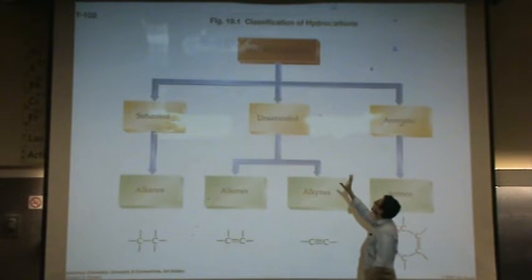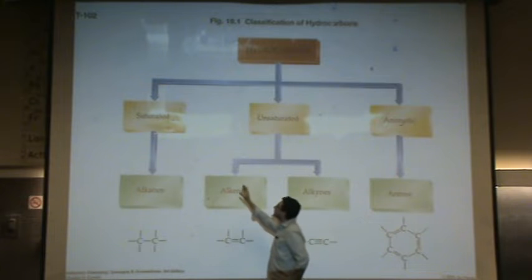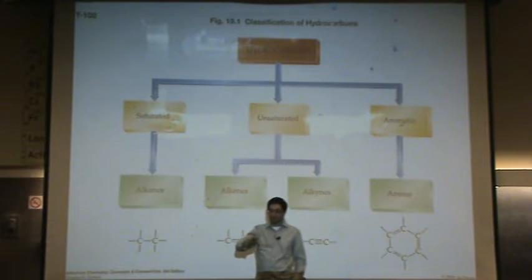So hydrocarbons. This is our first flow chart we are going to look at. When you have a hydrocarbon, which is organic, something with carbons and hydrogens, it is called a hydrocarbon.